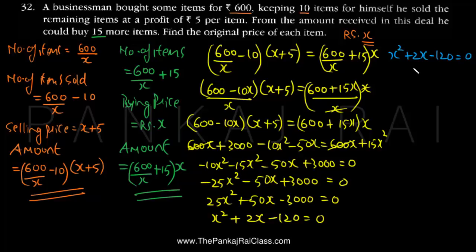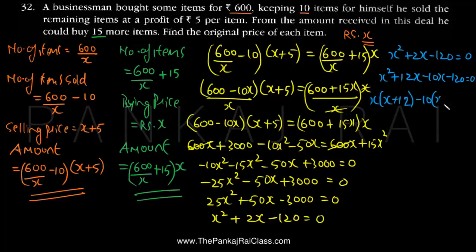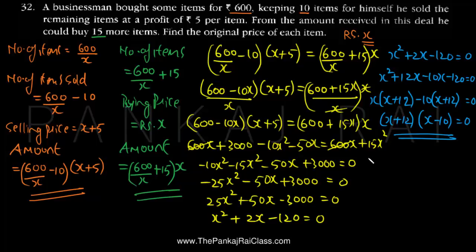The factors are 12 and 10, since 12 times 10 is 120 and 12 minus 10 is 2. So the equation factors as X² + 12X - 10X - 120 = 0. Taking X common from the first two terms and -10 common from the last two: X(X + 12) - 10(X + 12) = 0, giving (X + 12)(X - 10) = 0.